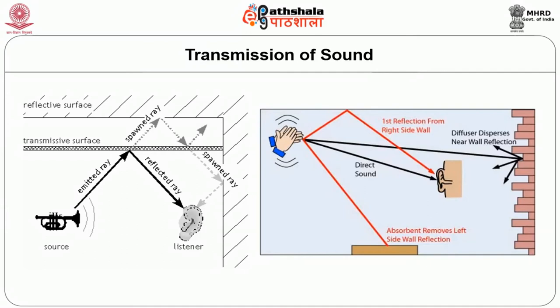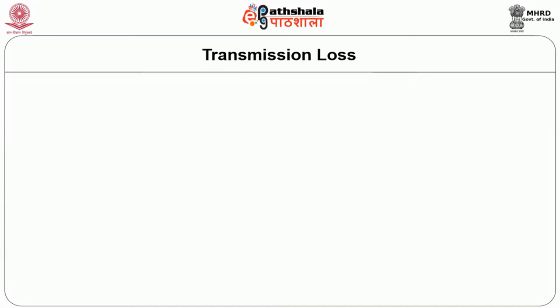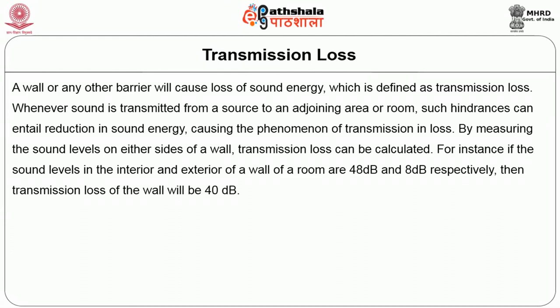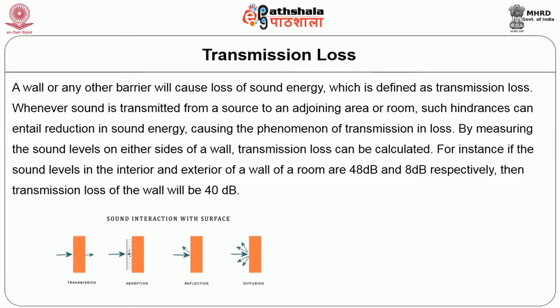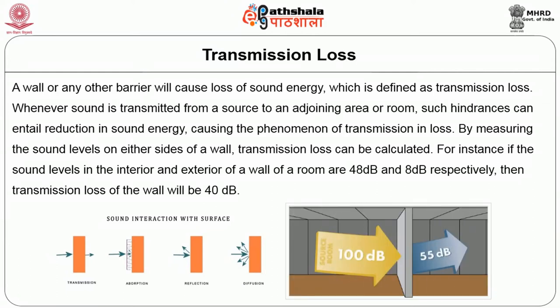There is every possibility of incurring losses in enclosed buildings, especially houses with different rooms. A wall or any other barrier will cause loss of sound energy, which is defined as transmission loss. Whenever sound is transmitted from a source to an adjoining area or room, such hindrances can entail reduction in sound energy, causing the phenomenon of transmission loss. By measuring the sound levels on either sides of a wall, transmission loss can be calculated. For instance, if the sound levels in the interior and exterior of a wall of a room are 48 dB and 8 dB respectively, then the transmission loss of the wall will be 40 dB.